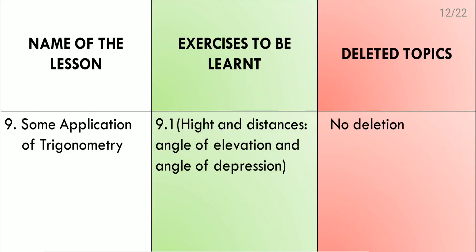Lesson 9: Some Applications of Trigonometry. There is only one exercise, 9.1, about heights and distances. It includes angles of elevation and depression, using simple angles: 45°, 60°, and 30°. No deletion is there from this lesson.